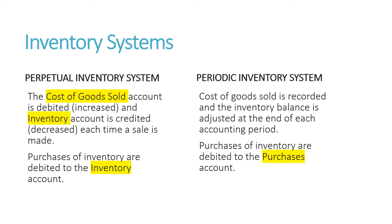With a perpetual inventory system, the inventory account balance is perpetually or continuously updated. So every time a purchase is made, we're going to debit or increase the inventory account. And every time we sell inventory, we're going to credit or decrease the inventory account and transfer the cost to cost of goods sold.